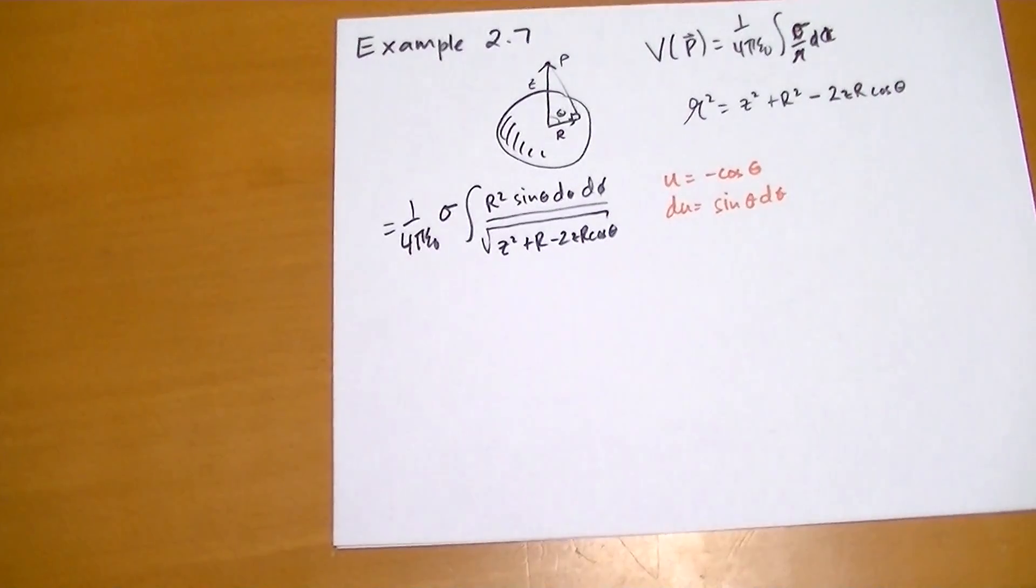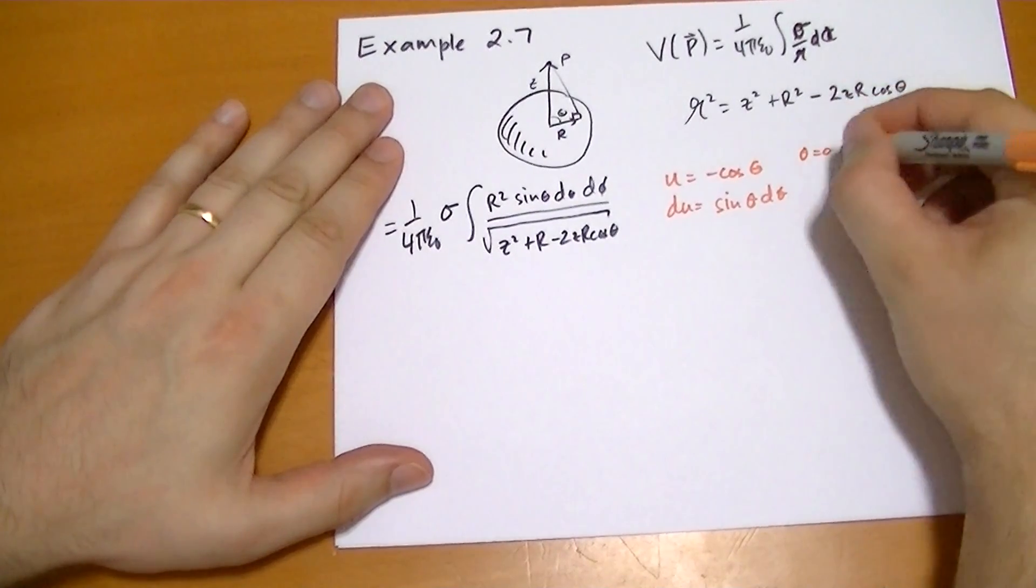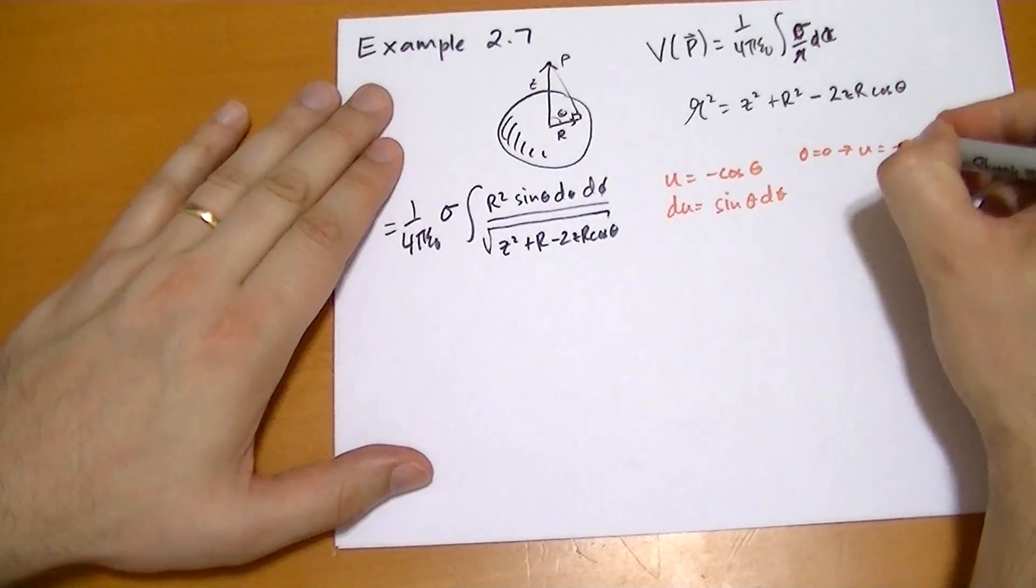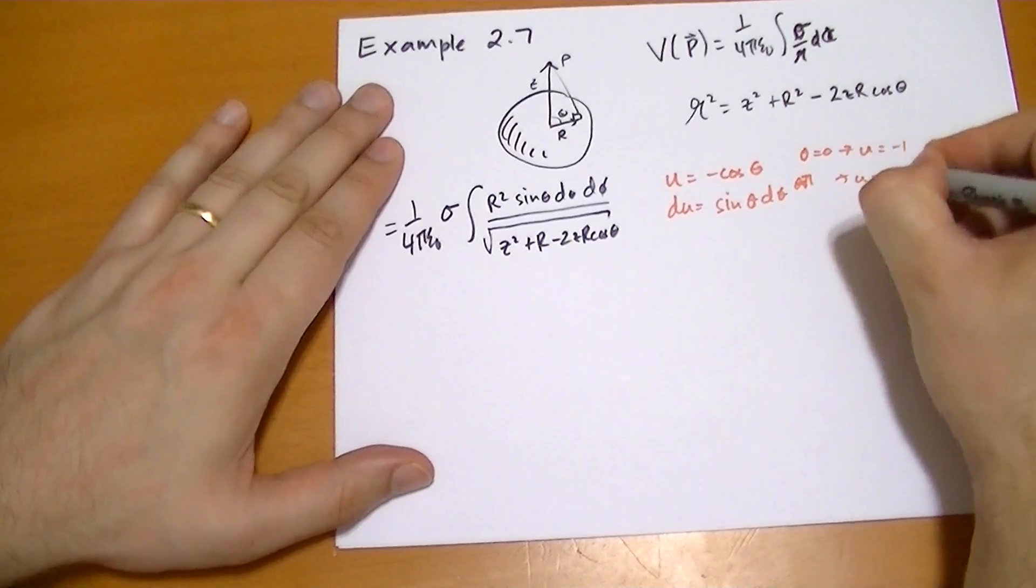And so this integral, we have to have theta as 0 means that u is equal to minus 1, and theta of pi means that u is equal to 1. Okay.